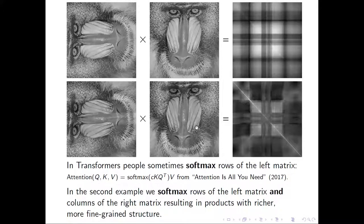In transformers, people often apply softmax to the rows of the left matrix. Here we also need to apply softmax to columns of the right matrix to obtain a richer, more fine-grained structure in the product.